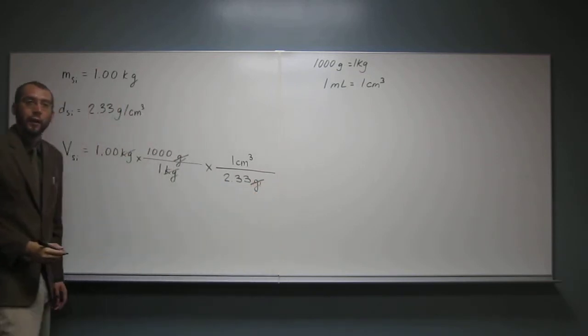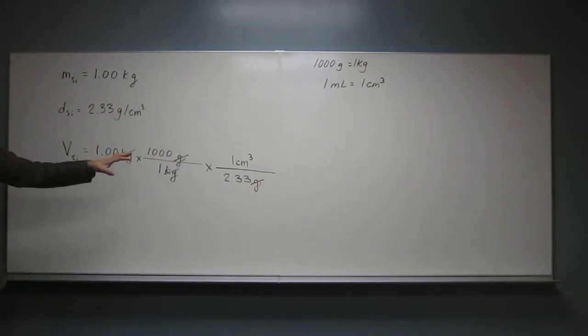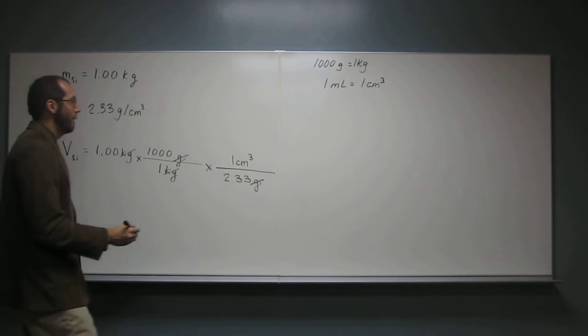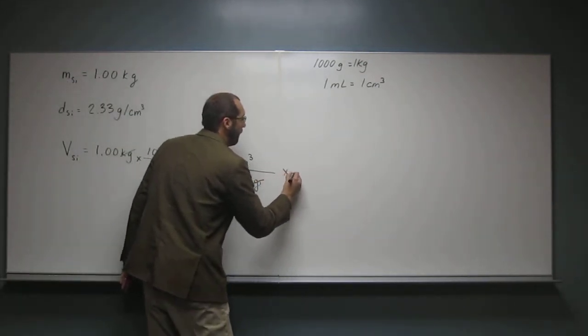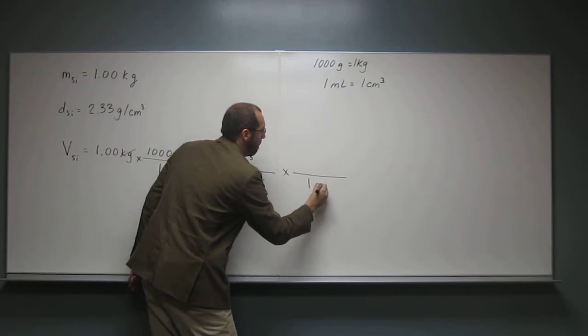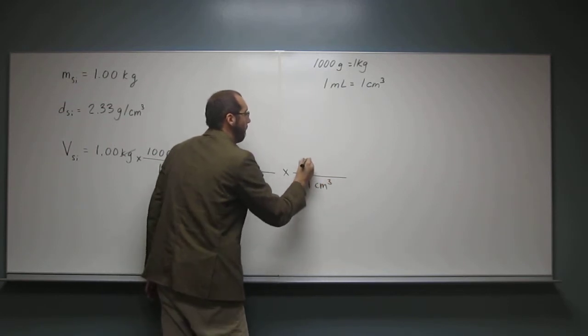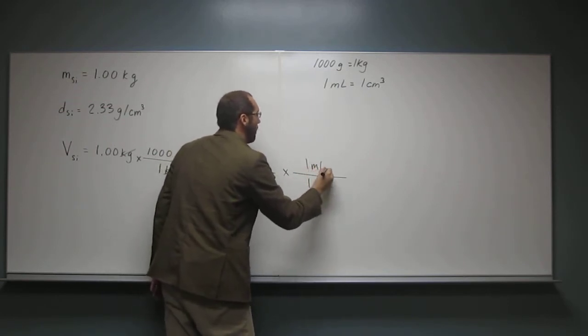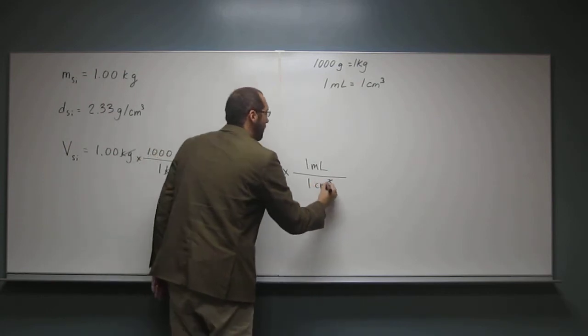So now we have grams canceled out, right? So probably pretty obvious now what we do, right? Just multiply this. What do we put down here? Cubic centimeters. And at the top? Milliliters. Very good. Cubic centimeters cancel.